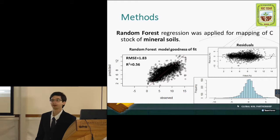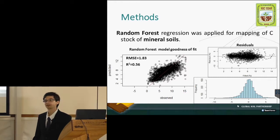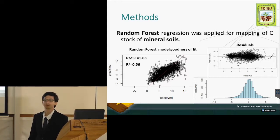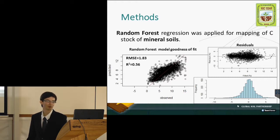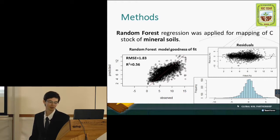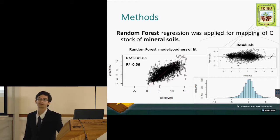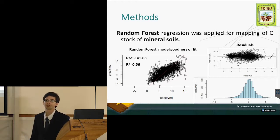For spatial modeling of soil organic carbon in mineral soils, we used a random forest regression. The resulting model has a root mean square error of 1.83 and R-squared of 0.56, which we see as sufficient accuracy for this global assessment of soil organic carbon.